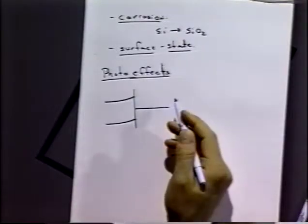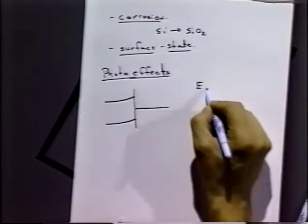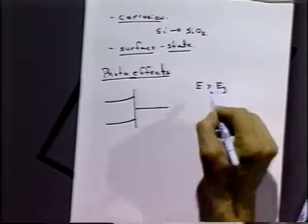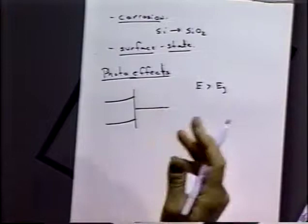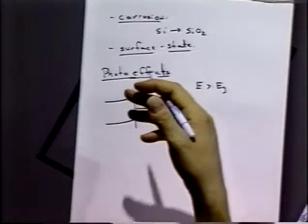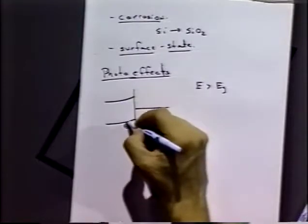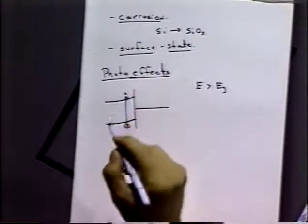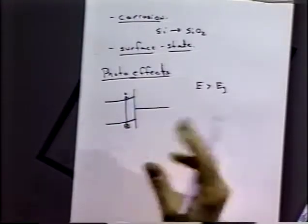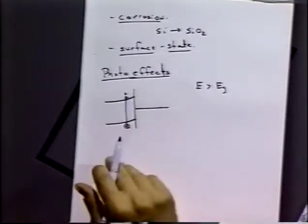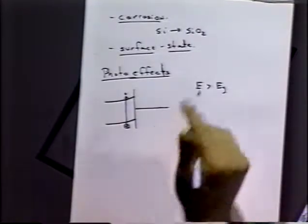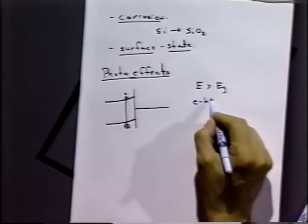Now if a photon comes along with energy greater than the energy of the gap, the electron will be promoted from the valence band to the conduction band, so we'll get an electron promotion into the conduction band due to the absorption of light by the semiconductor material. So we're getting what they call electron-hole production.